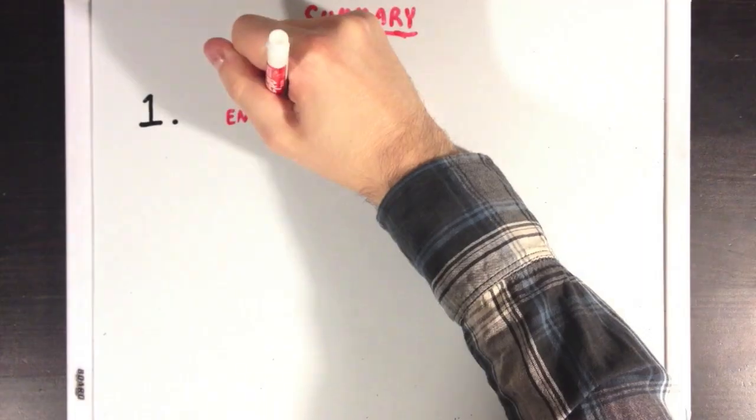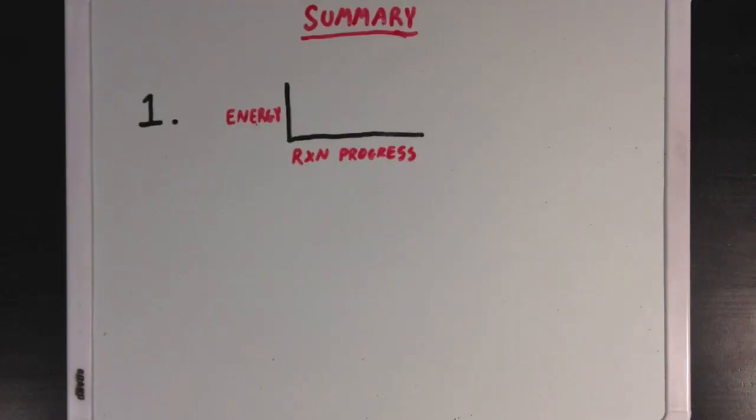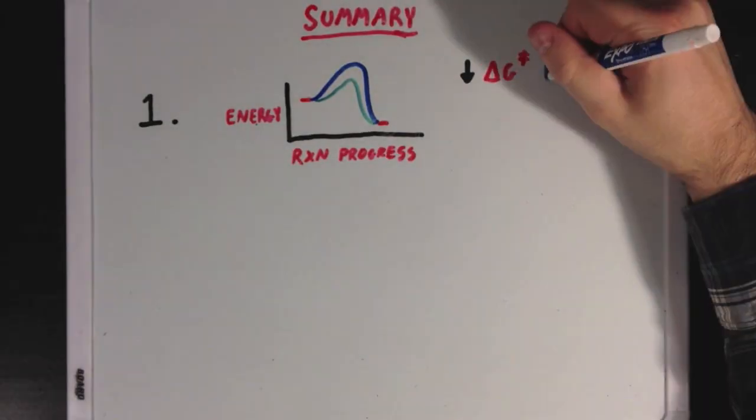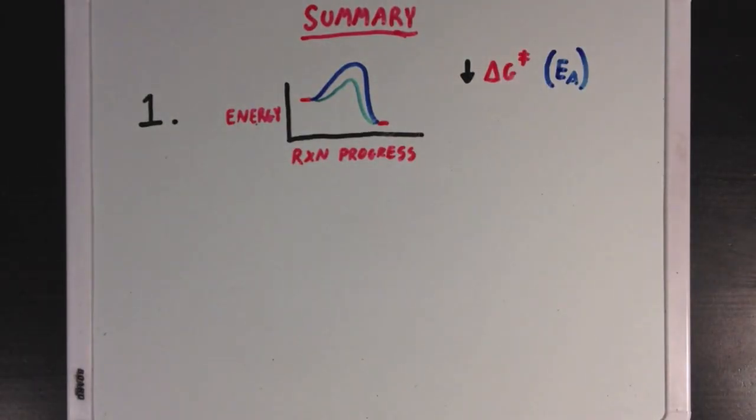So what did we learn? Well, first we learned that enzymes work by lowering the free energy of activation of a reaction, making it much easier for the reactants to transition and form products. And we also learned that the free energy of the reaction doesn't really change when you use an enzyme and when you don't.